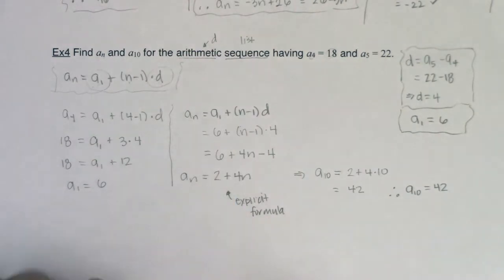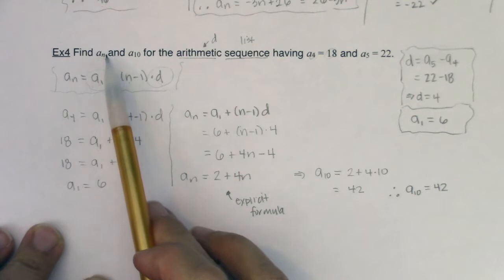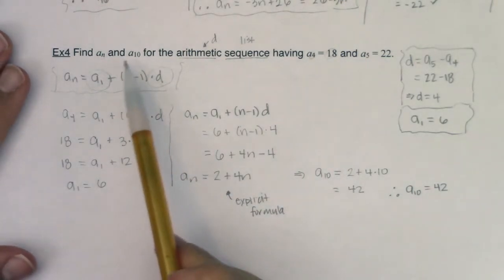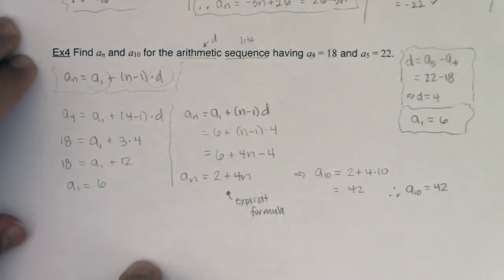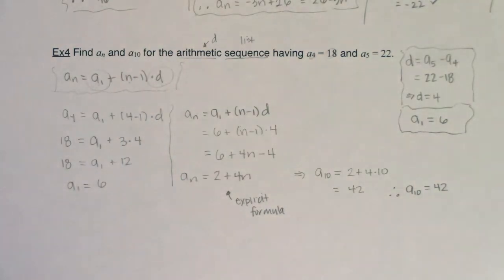So the main advantage in finding a_n and I like to find a_n first is then I can plug in any subscript that I want and I can find that a_nth term. Whereas if you were just going to use this formula for a_10, it would just limit you only to a_10 a la what we saw in example 3. So for me personally, I find the explicit formula first and then I plug in my n value.